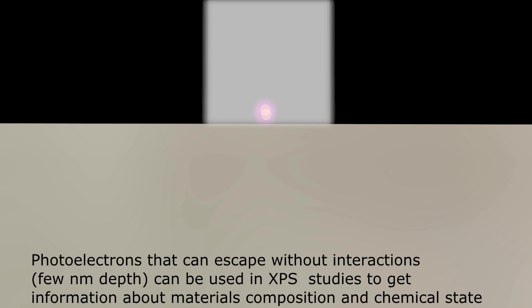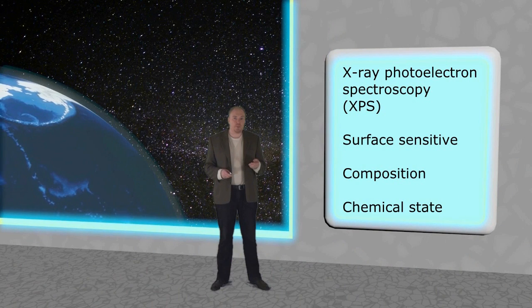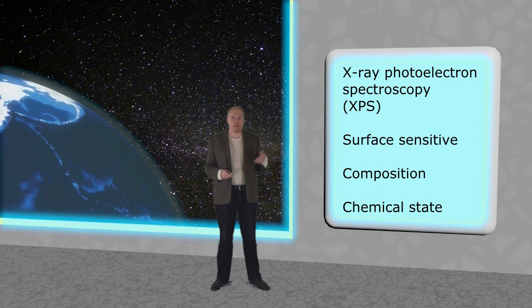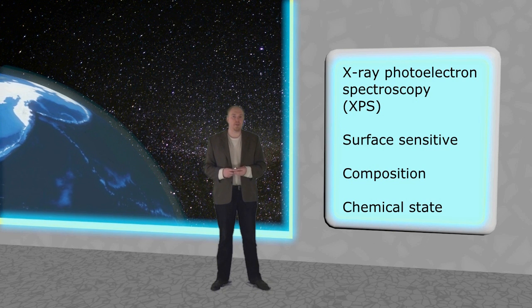Only those photoelectrons that were generated near the surface, at a depth of only a few nanometers, can escape without further interactions. Therefore, these photoelectrons carry information about the material's composition and chemical state and are used in XPS studies. This makes photoelectron spectroscopy a very powerful material surface characterization method. So it's perfect for surface studies, but we may not get the information about the bulk material itself.